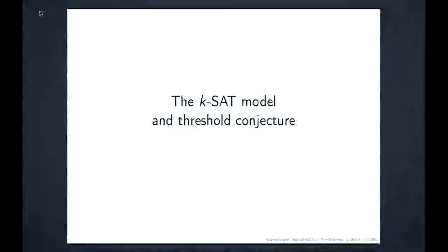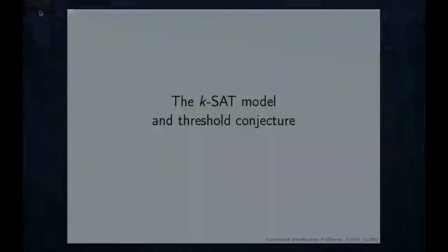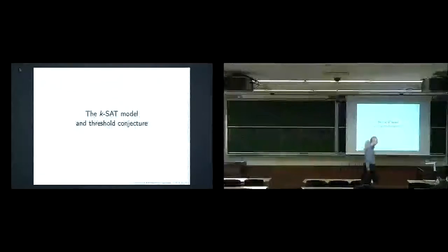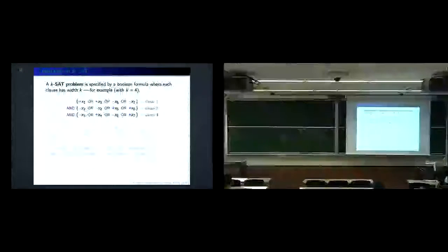Let's focus on the K-SAT model and the threshold conjecture. The K-SAT problem is specified by a Boolean function where each clause has K literals — K is a parameter. This example has K equal to 4 and three clauses. The variables are X1 up to Xn using plus/minus notation for true/false. Clause one is X1 OR NOT X3 OR NOT X5 OR NOT X7, and you try to satisfy all clauses simultaneously.